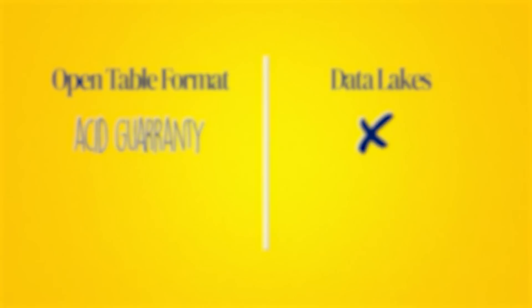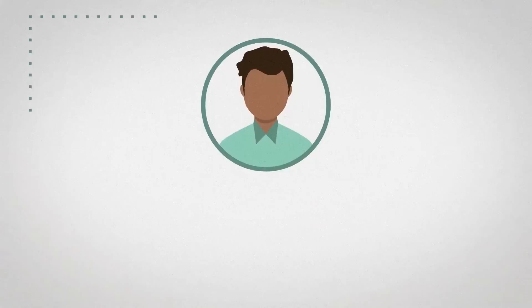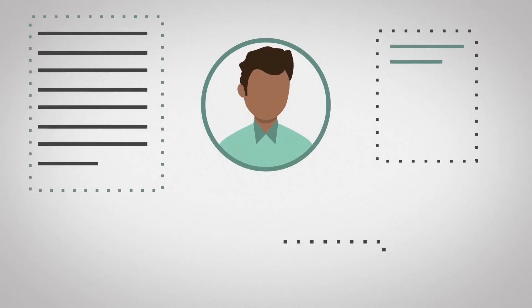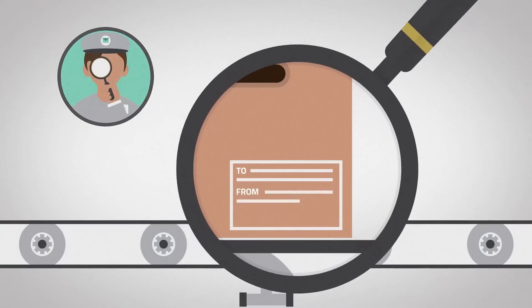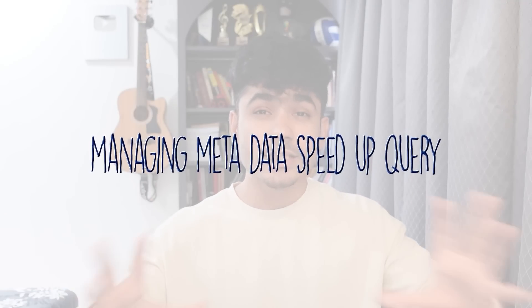A lot of times you want to make changes to the structure of your data — add a column, remove a column, or rename something. You can't do that on a data lake, but open table formats handle this very easily. You can always go back to the older version of your data and interact with it. Open table formats also have an efficient metadata management system. It's not just about storing your data — it's also about storing information about your data, which we call metadata: how many columns, data types, number of rows, max value, min value. Managing metadata efficiently can drastically speed up queries.